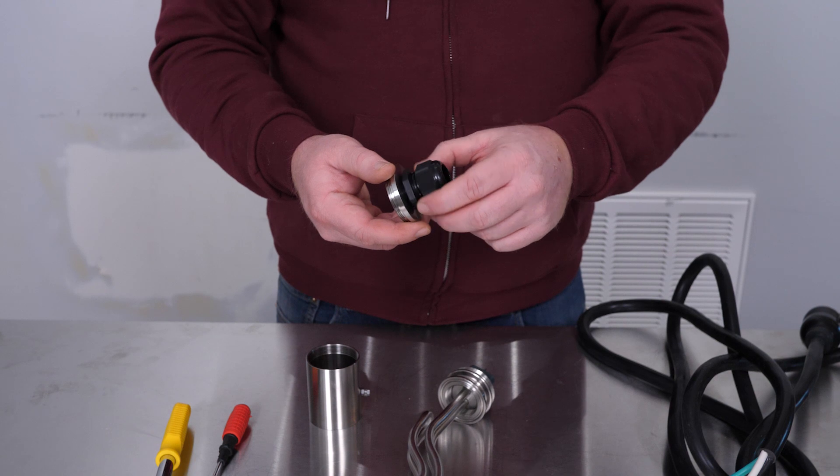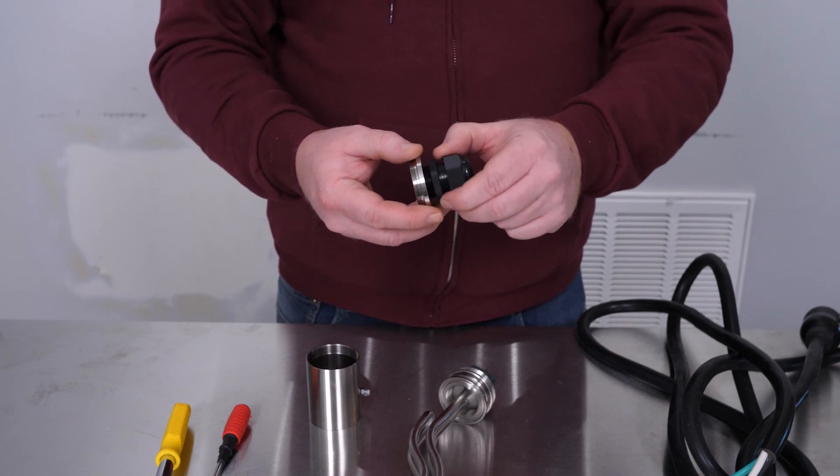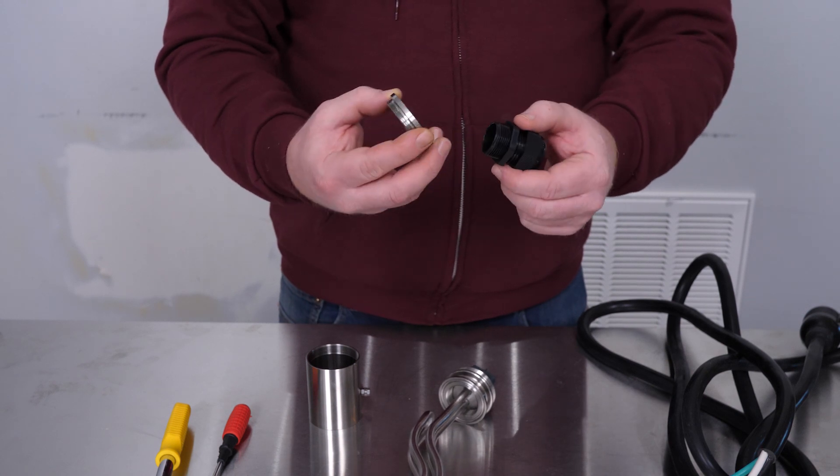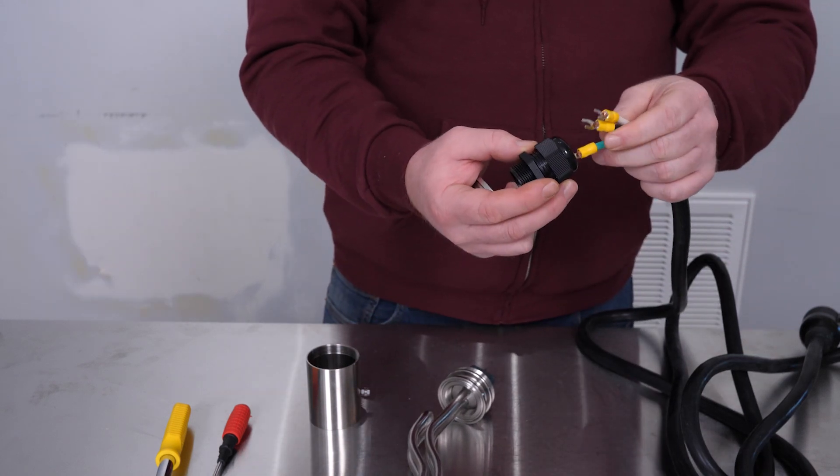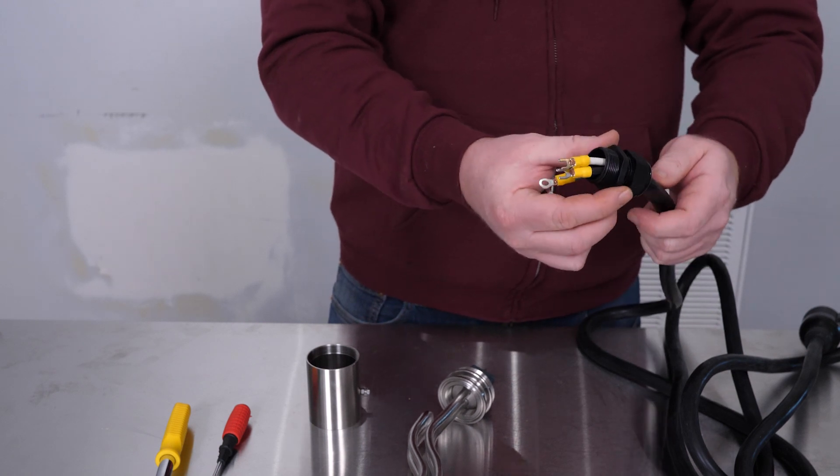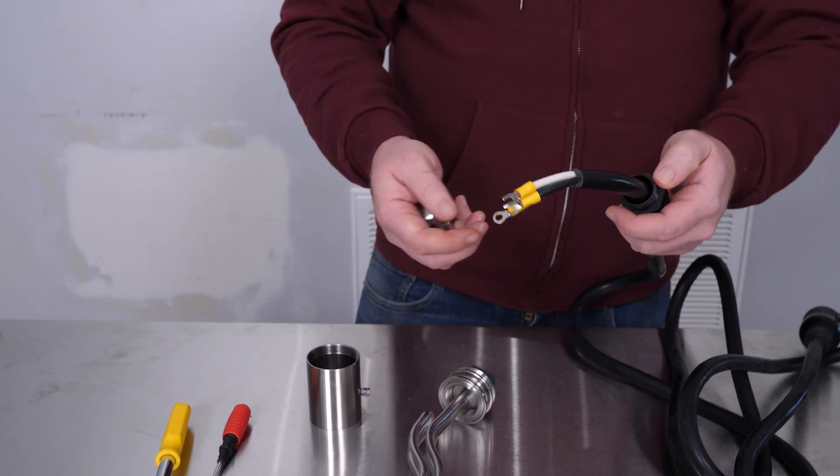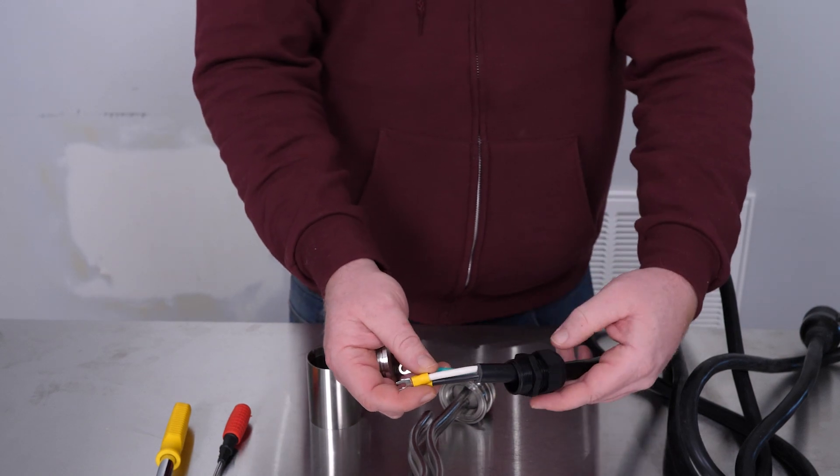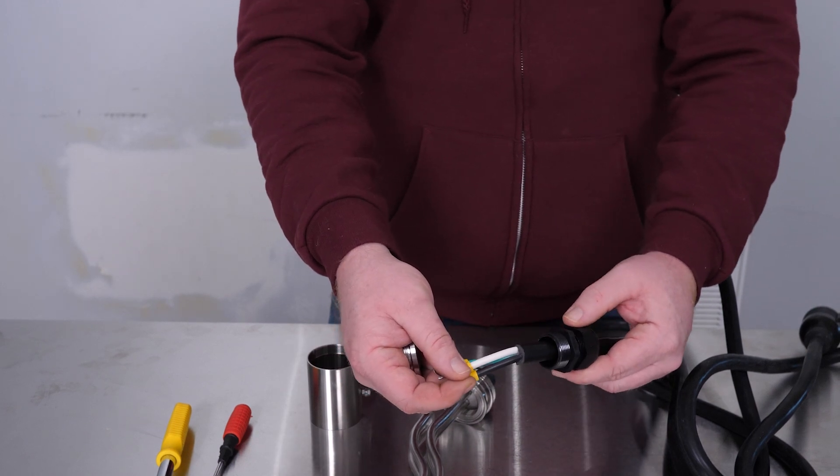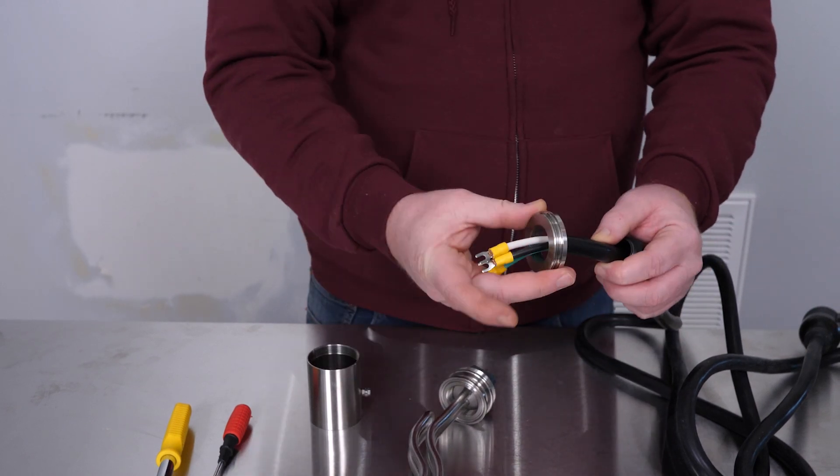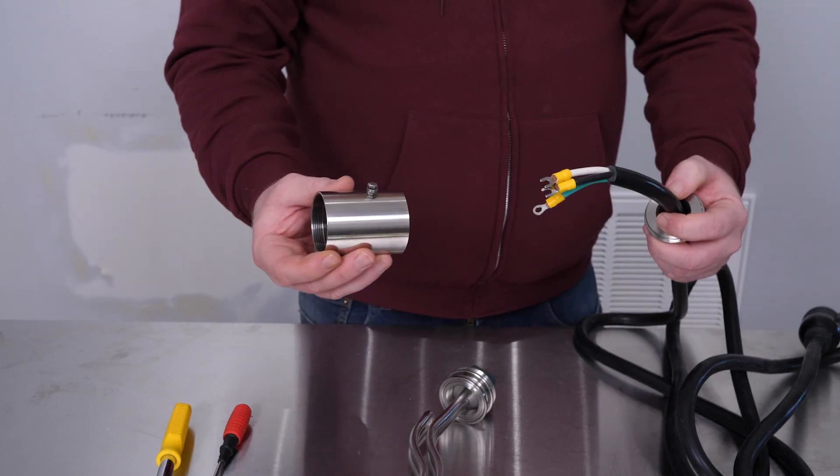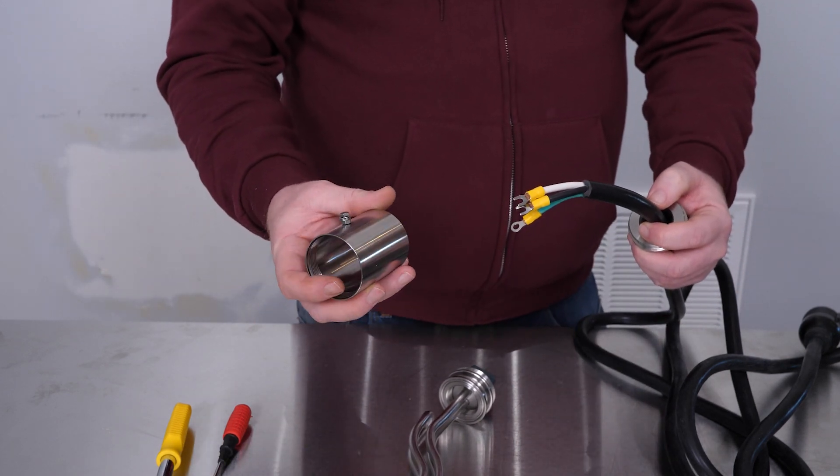Now take the cord grip and unscrew it from the other cap for the sleeve. Slide the cord grip over the power cord, making sure you get all three of the cables. Get your cord grip with the threads facing forward, then slide on the cap.